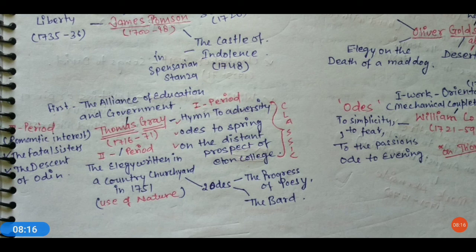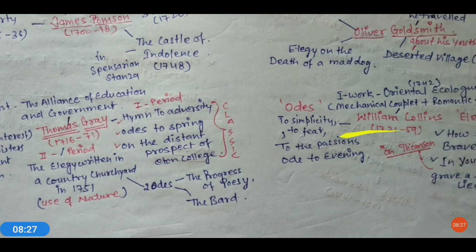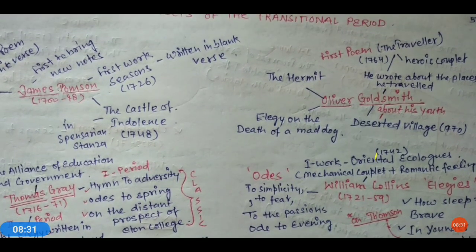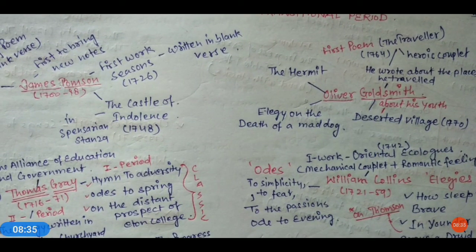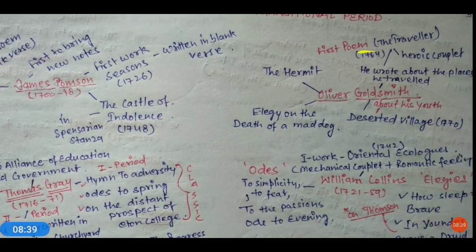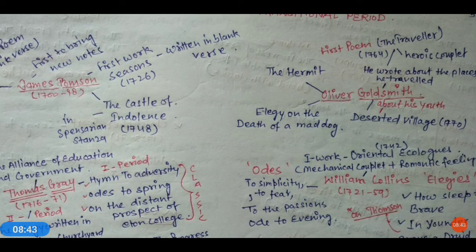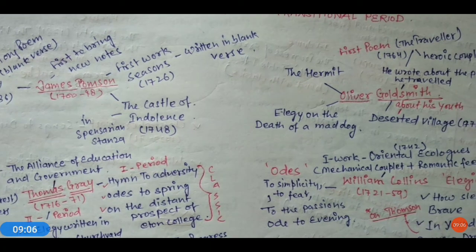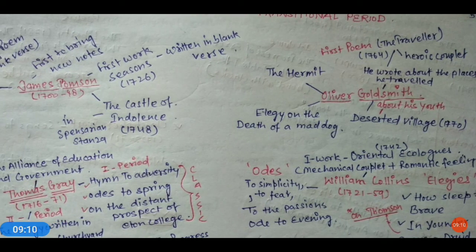The third period of Gray's writing shows Romantic interest — he wrote 'The Fatal Sisters' and 'The Descent of Odin.' Now let's talk about Oliver Goldsmith. His first poem was 'The Traveler,' published in 1764, written in heroic couplets about the places he traveled. His other works include 'The Hermit,' 'Elegy on the Death of a Mad Dog,' and 'The Deserted Village' in 1770.